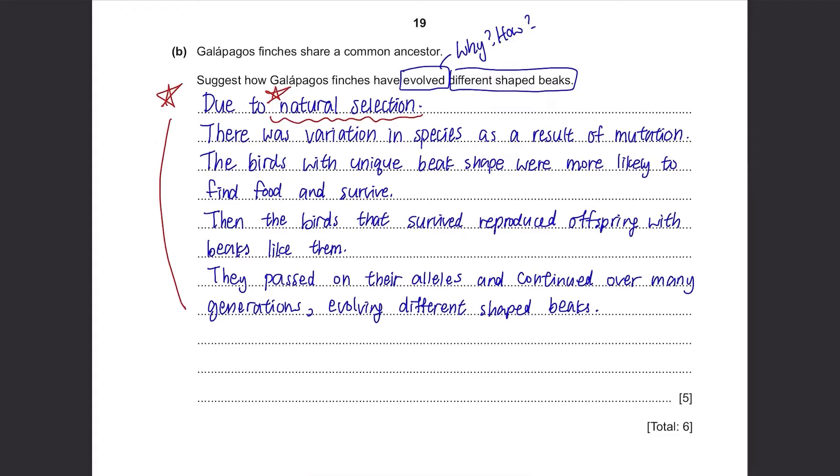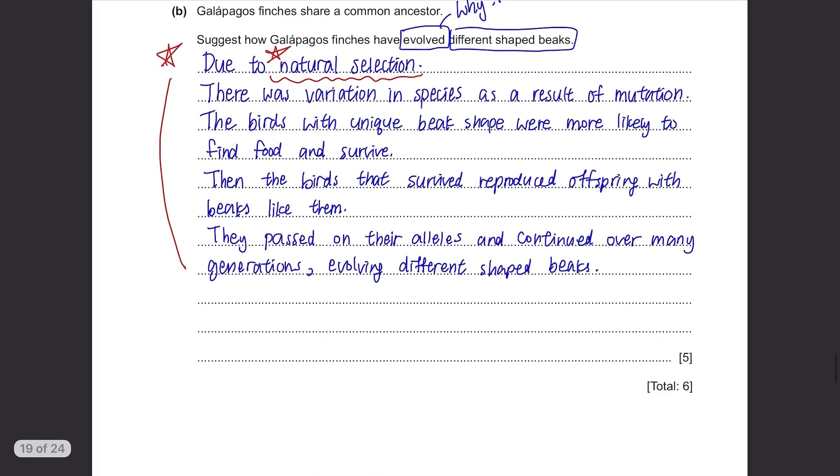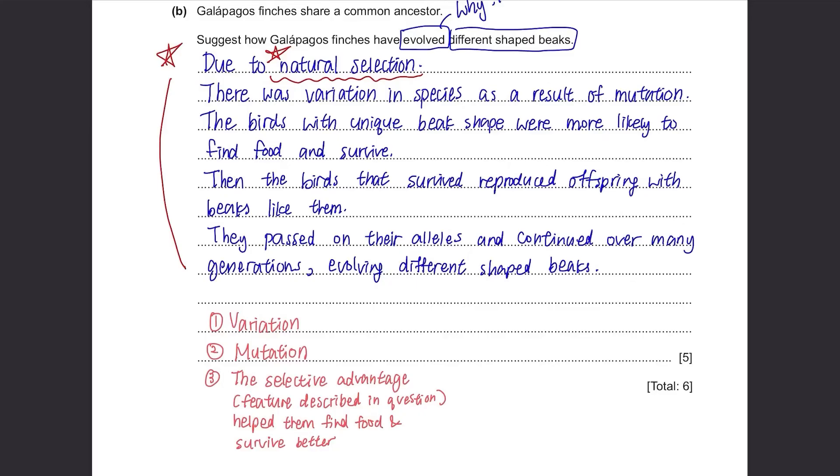So when you want to answer questions about natural selection, first state that there is a variation in whatever physical feature the question talks about and that it is due to mutation. Then state that this physical feature could have given this organism an advantage to find food and survive better than others. The next point is that it reproduced offspring and passed on their alleles and continued over many generations.